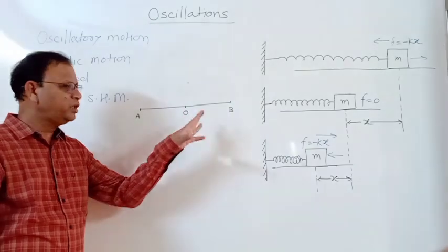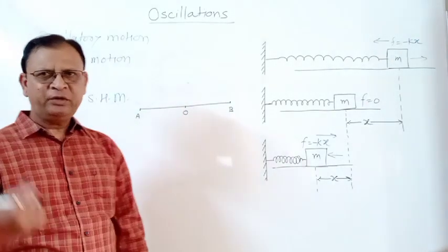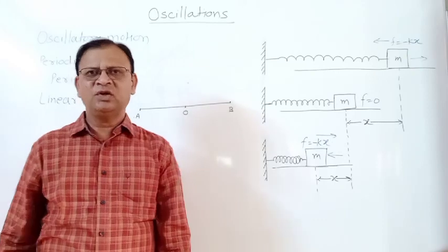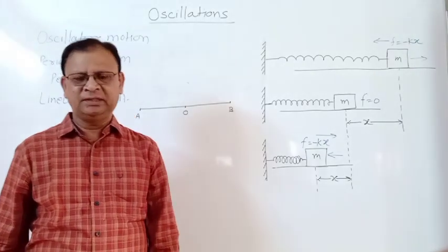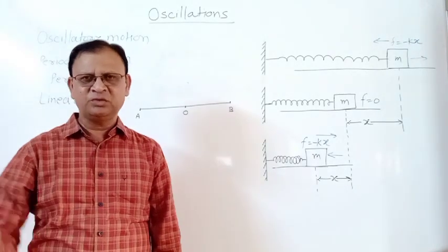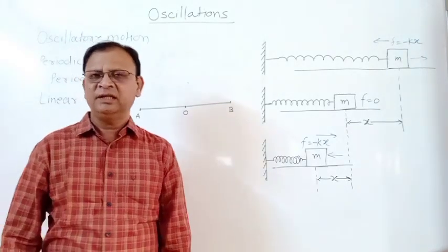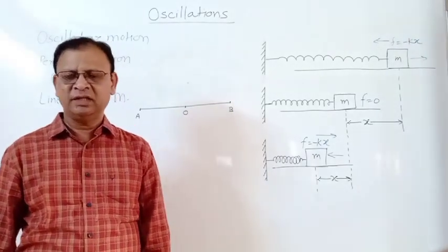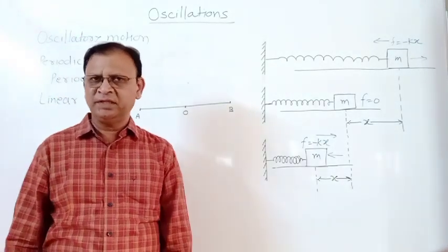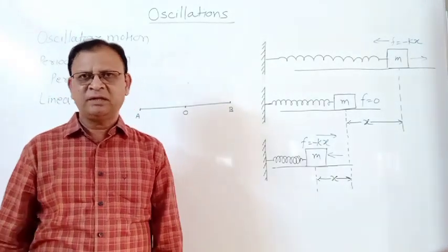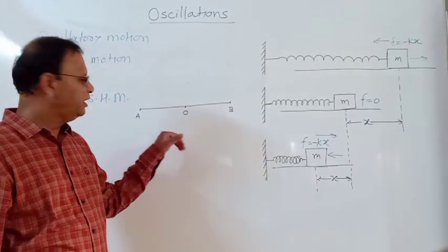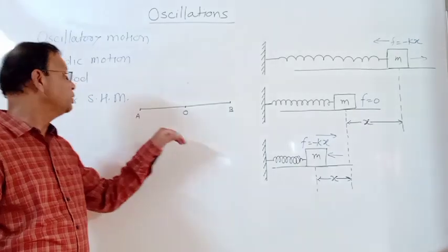Examples of oscillatory motion include the motion of a pendulum in a clock moving to and fro, the up-and-down motion of the needle of a sewing machine, and the vibrations of strings in musical instruments such as guitar and sitar.